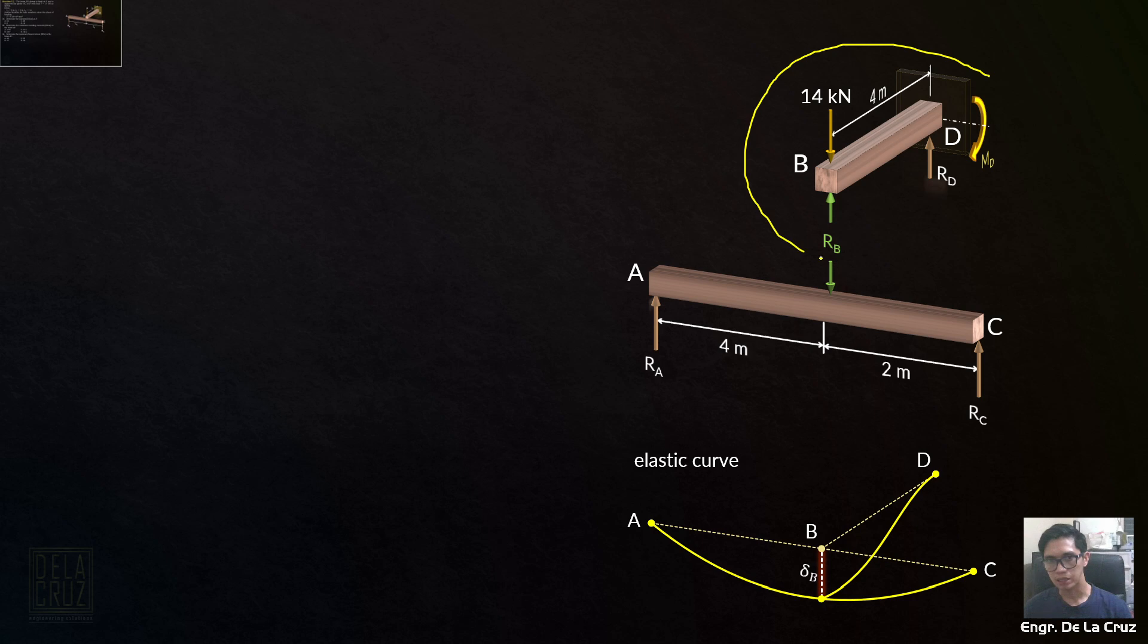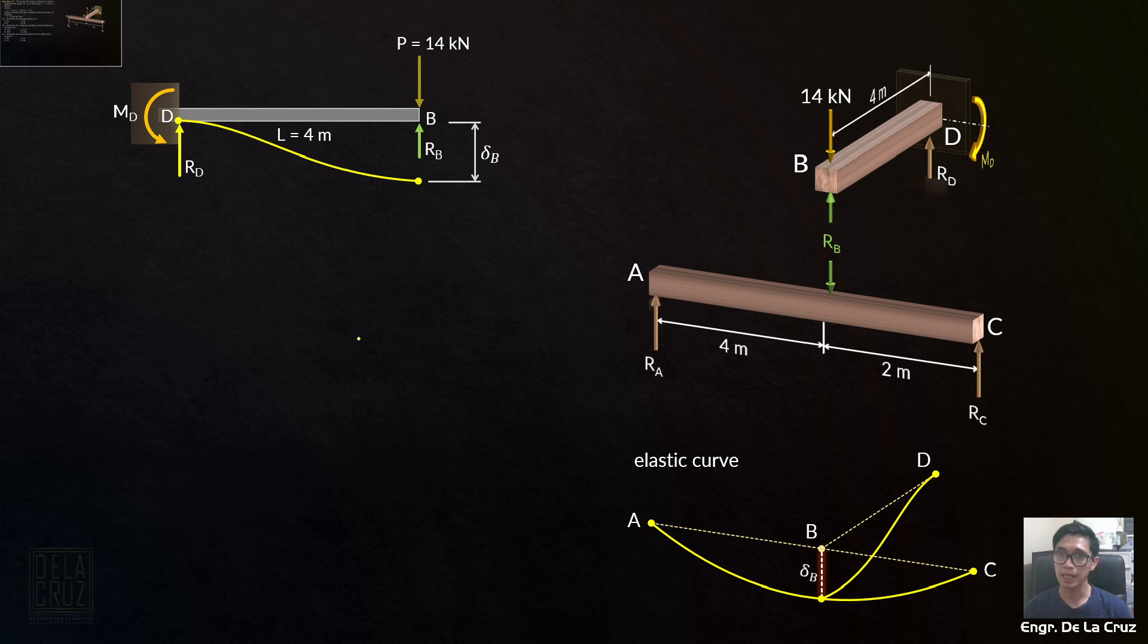So we'll get the internal reaction at the beam. That's the load that will be passed to member AC. How do we do that? Let's analyze this first. For that beam, a cantilever beam, this is the free body diagram. We'll look at it in side view. For the beam AC, it's a simply supported beam because the reaction is already given like this.